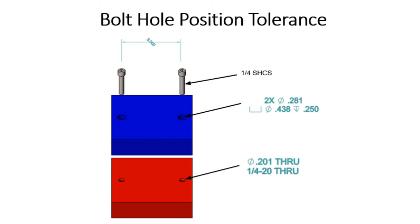In this example I'll use the fixed fastener formula, meaning one part has tapped holes for the screws to thread into and one or more parts have clearance holes.